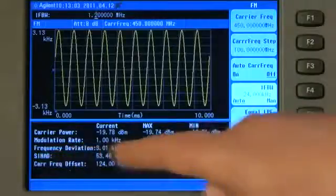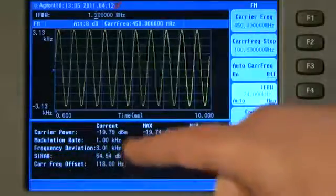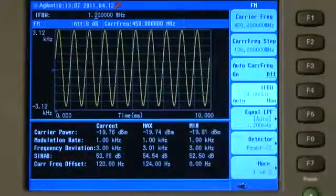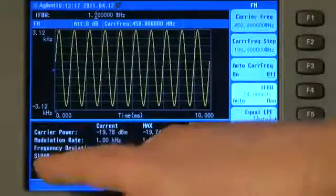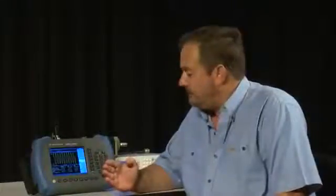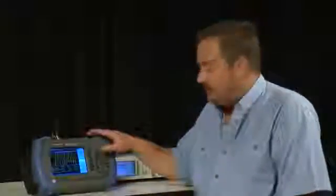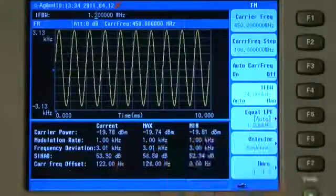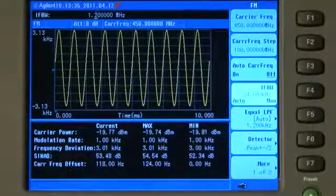It even measures the sinad of the signal, currently 53 dB because we have got a nice strong carrier. And it even tells us the carrier frequency offset. That is the error from the nominal carrier frequency of 450 MHz that the analyzer is measuring. So you can see the carrier frequency of this transmitter is about 120 Hz high.